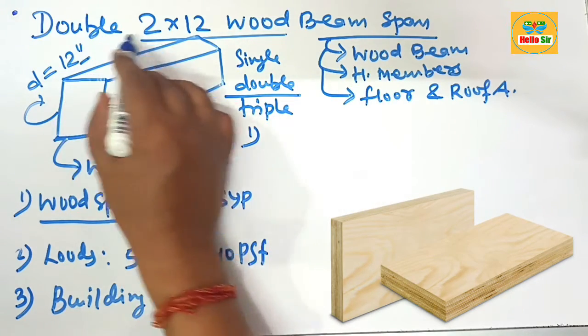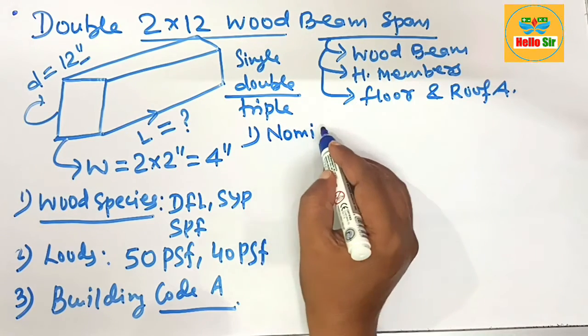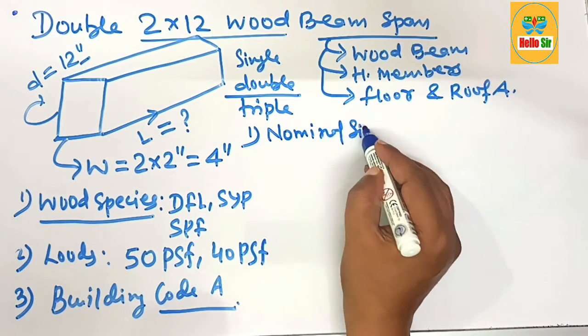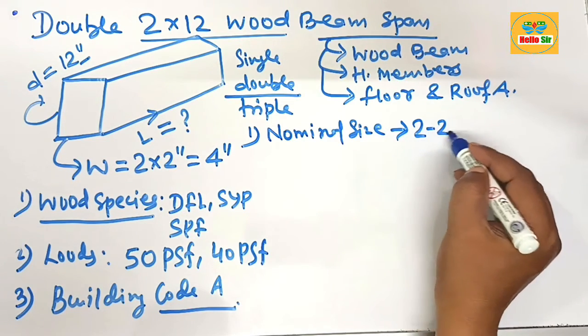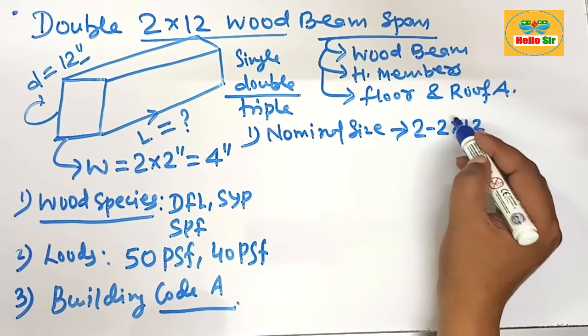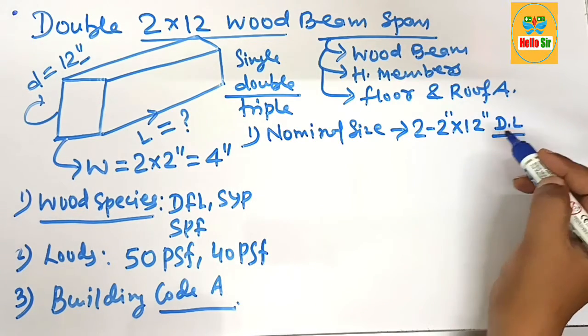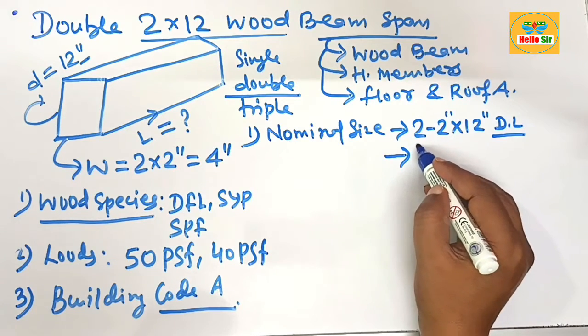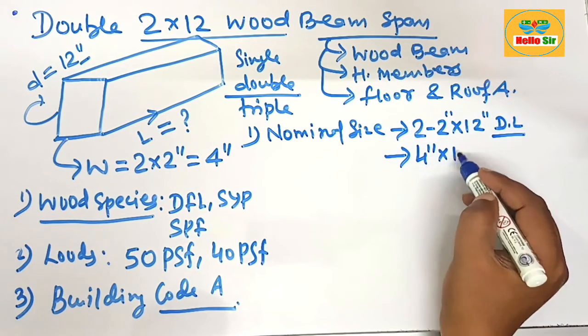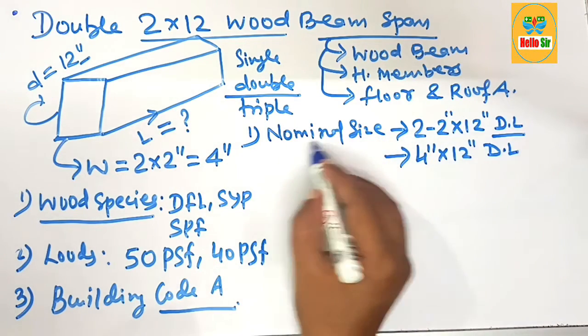First, we understand the nominal size for a double 2 by 12 wood beam. The nominal size of this beam is two pieces of 2 by 12 inch dimensional lumber sandwiched together, and their size can also be written as 4 inches by 12 inches dimensional lumber.